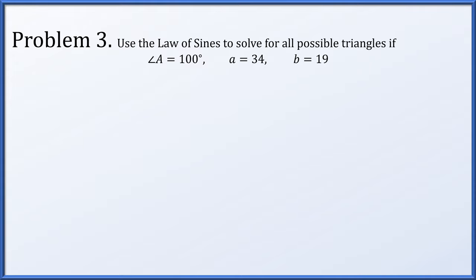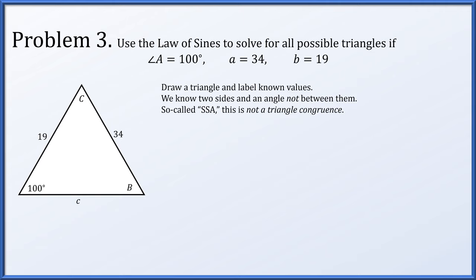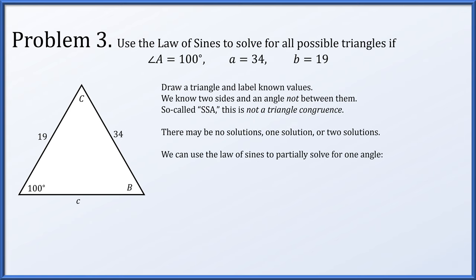In problem three, we'll use the law of sines to solve for all possible triangles, given that angle A is 100 degrees, side length a is 34, and side length b is 19. We know two sides, but the angle we know is not in between them — that's called side-side-angle. This is not a triangle congruence, meaning there might not be any solutions at all, there might be one solution, or there could be two different solutions. We can use the law of sines to partially solve for one angle.